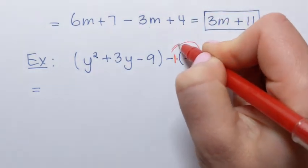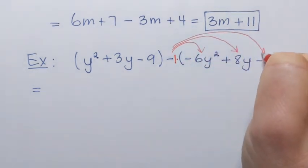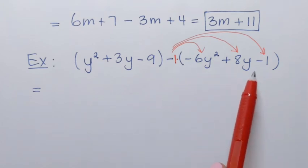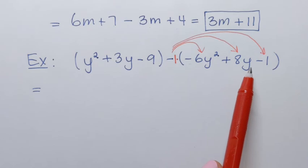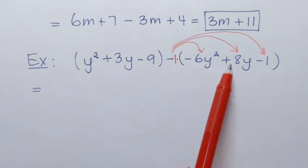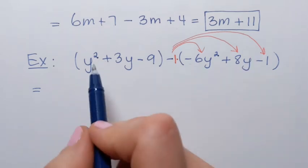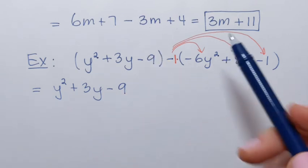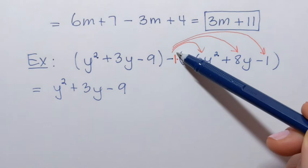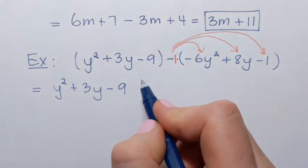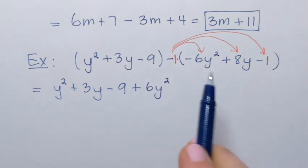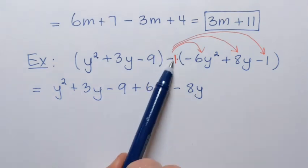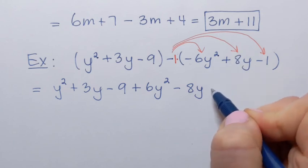We have to represent that negative as negative 1 times the expression, meaning negative 1 is multiplied by every single term inside the parentheses. Multiplication by negative 1 will just switch all signs to their opposites. The first polynomial I'm rewriting with no parentheses and no changes. For the second polynomial: negative 1 times negative 6 is positive 6, so plus 6y squared. Negative 1 times positive 8 is negative, so minus 8y. And negative 1 times negative 1 is positive, so plus 1.